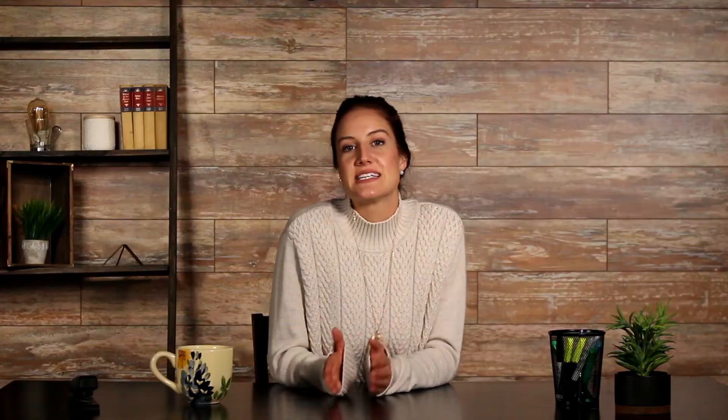Theta is measured counterclockwise. To add vectors together, first sum the x-components and the y-components. Find the magnitude of the resultant vector by taking the square root of the sum of the components squared. So, r equals square root of r-sub-x squared plus r-sub-y squared. Finally, determine the angle of the resultant vector by taking the inverse tangent of r-sub-y divided by r-sub-x. So, theta equals inverse tan of r-sub-y divided by r-sub-x.